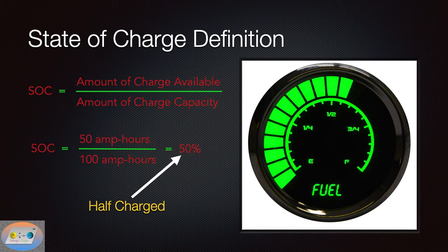Like I said, it's very similar to your gas gauge on your car. If you have half a tank of gas, you can say I have 50% energy capacity available for my gas tank. Same thing. So we're half-charged at 50% if we have 50-amp-hours of availability of charge with a total charge capacity of 100-amp-hours. Let's move on to the next slide.